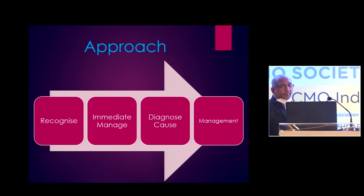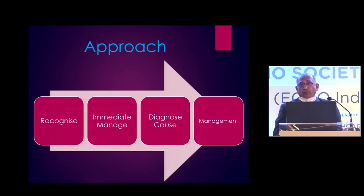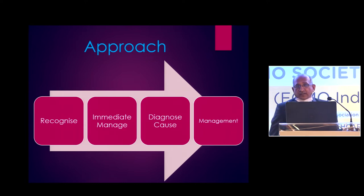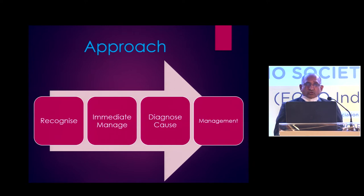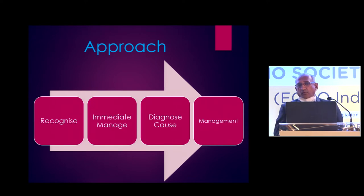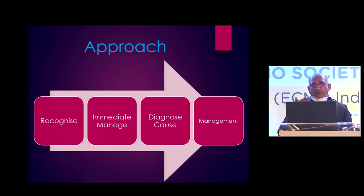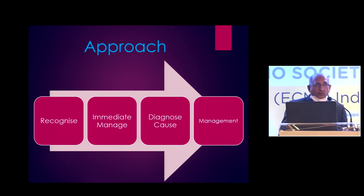What will your approach be when you troubleshoot? First is to recognize the problem — and recognition is most important before a catastrophic event takes place. For example, before the oxygenator gets completely clogged and the flow comes down, you should recognize it when there is an increase in the delta pressure. That is the most important measure — keeping an eye on circuit pressure. When the delta pressure is going up, recognize it at that stage. If you recognize it early, you can find an alternative, get everything ready, and change the oxygenator. If you only find out suddenly when the oxygenator stops, there will be a catastrophe.